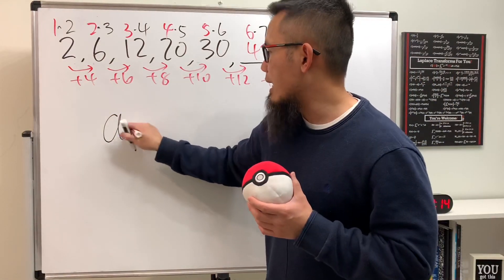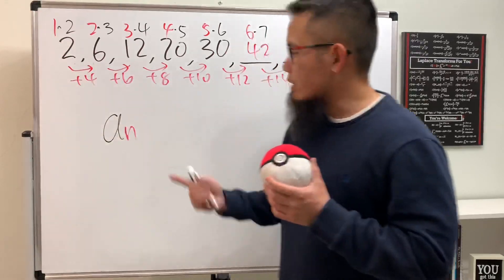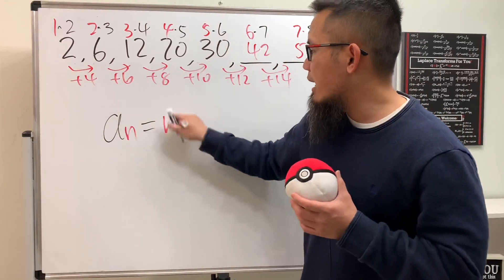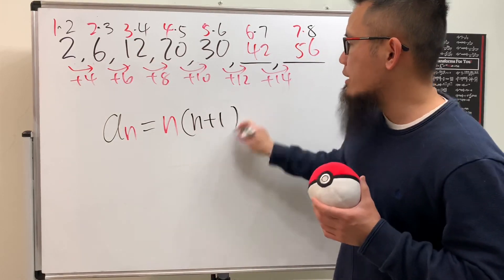So if you want to figure out an formula, check this out though. an, n starts with 1, so you just have to put down that 1. So this right here is just going to be n, and then the second number is always going to be 1 more than the first one, so we just have to multiply by n plus 1. And guess what? This right here is the formula for this.